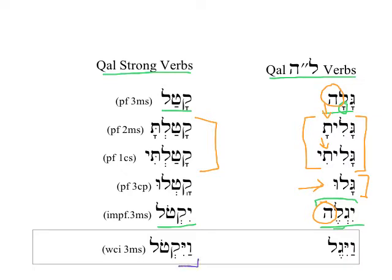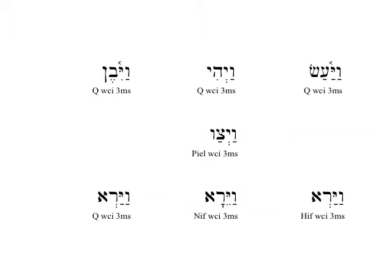One last thing to consider: when we look at vayyiqtol, 'and he killed' — the kal vav-consecutive imperfect 3ms — and compare it to vayyigel, 'and he revealed' or 'and he uncovered,' notice the he just drops out altogether in this circumstance. This is very characteristic of what we'll find with the vav-consecutive imperfects for lamed-he verbs. In the vav-consecutive imperfect form, no matter what the stem is, we have the dropping off of the he, and we just need to be prepared for that.